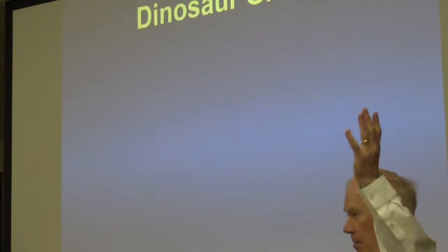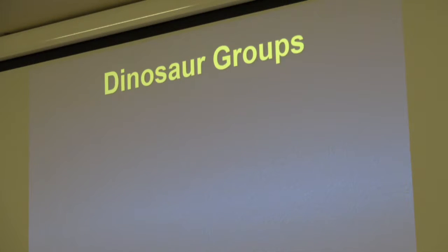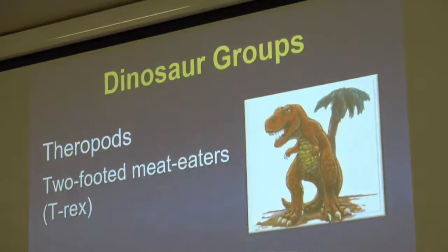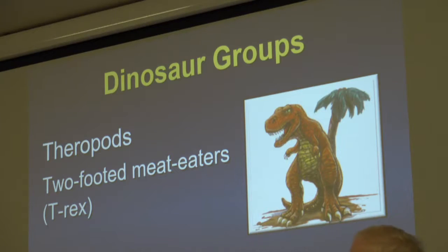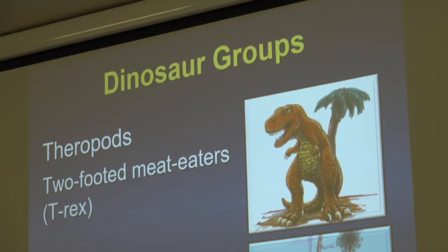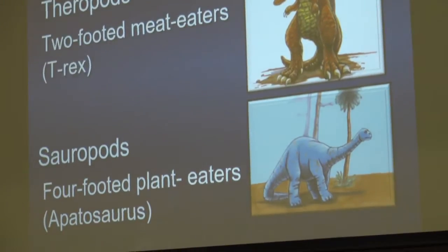So what were dinosaurs like? One group of dinosaurs is called the theropods — those are the two-footed meat eaters. Another group is called the sauropods — those are the four-footed plant eaters, like the apatosaurus. There are other categories scientists group things into, but if you're putting things into groups, you're already thinking like a scientist, because that's what they like to do.